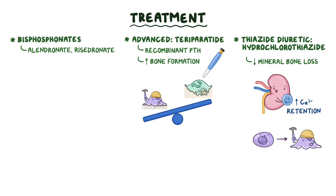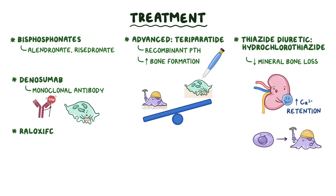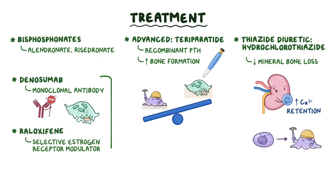Finally, medications like denosumab — a monoclonal antibody that inhibits osteoclasts — and raloxifene, a selective estrogen receptor modulator, can be used for postmenopausal osteoporosis.